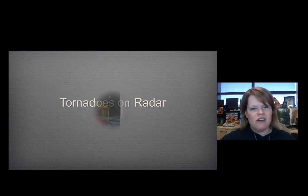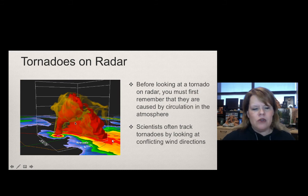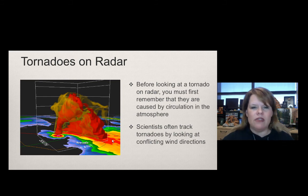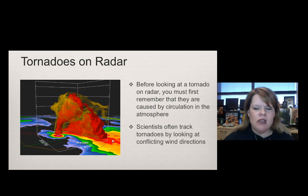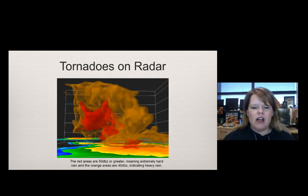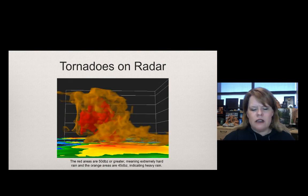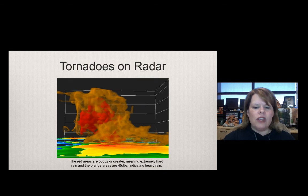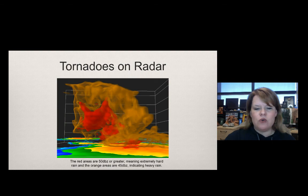Let's look at what tornadoes look like on weather radar. You can see intense red areas — that's the wall cloud with rotation, and if the air gets heavy enough it can drop down as a funnel at the bottom of that screen. Before looking for a tornado on radar, remember they are caused by circulation in the atmosphere. Scientists track tornadoes by looking at conflicting wind directions from opposite directions — the colliding of different air masses. Red areas are 50 dBZs or greater, extremely intense. Orange areas are 45 dBZs, indicating heavy rain. The red areas are most associated with tornadic activity.